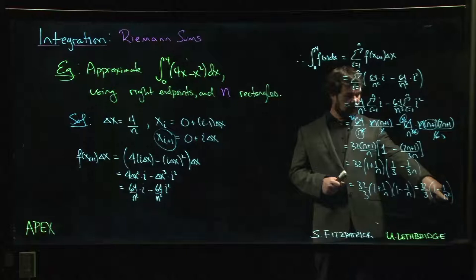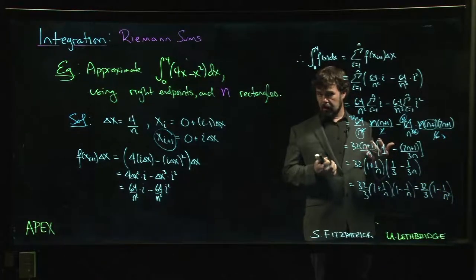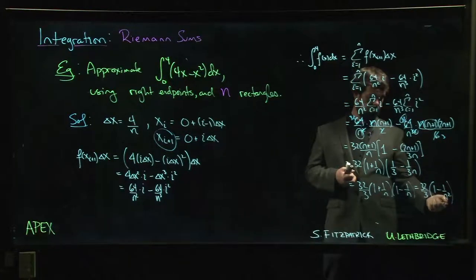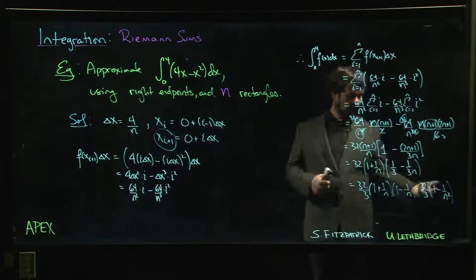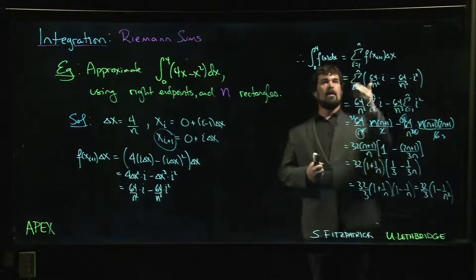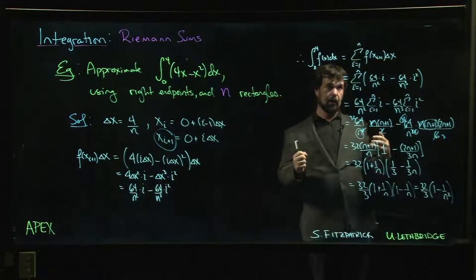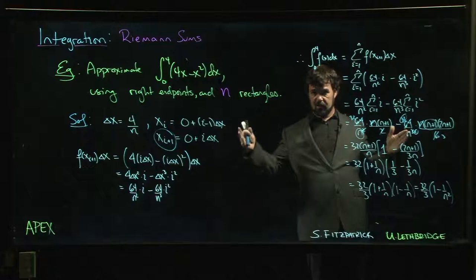It tells us something more. If we let n get bigger and bigger, in fact we could think about doing something like a limit here. If we let n go to infinity, what happens? This just goes away. We did that way back in the very first chapter. We know what happens as n goes to infinity. This goes to 0.